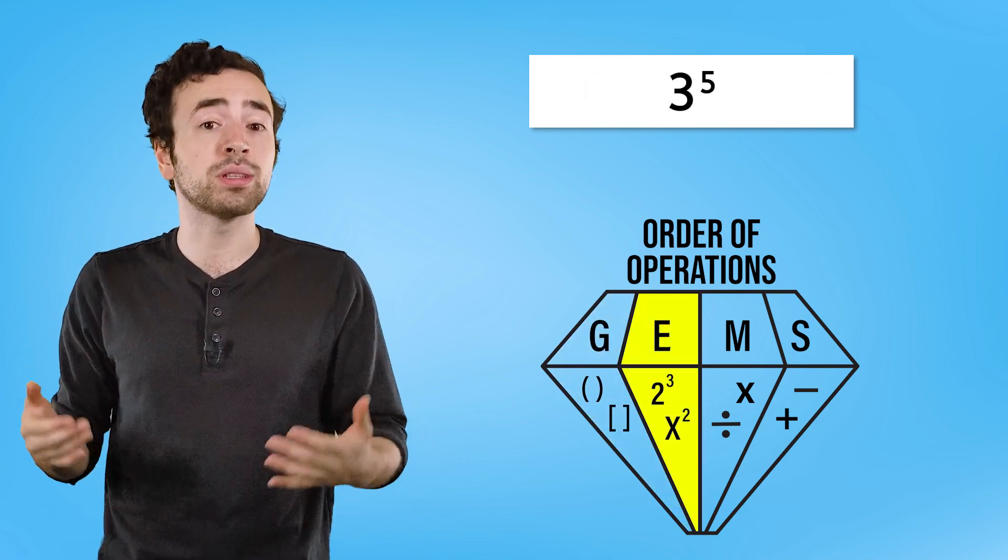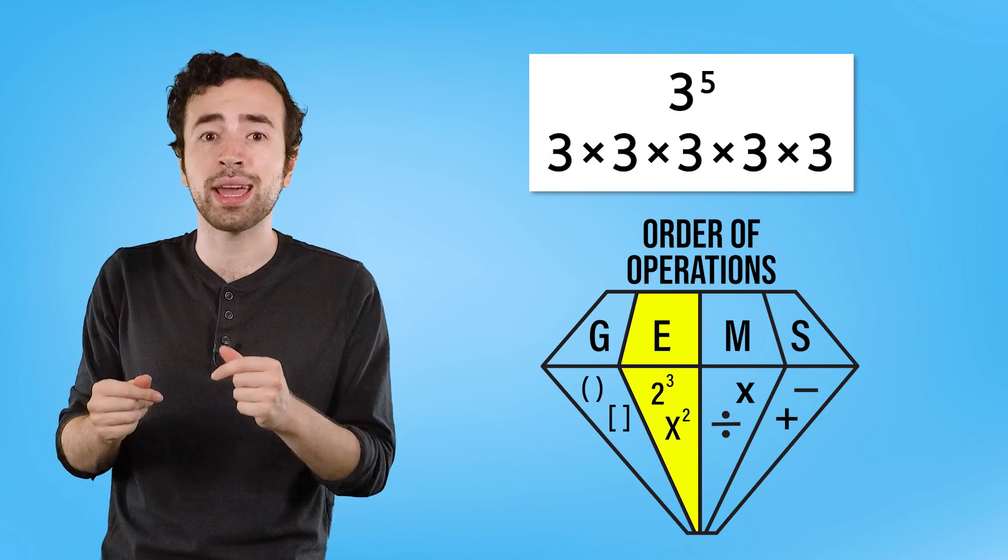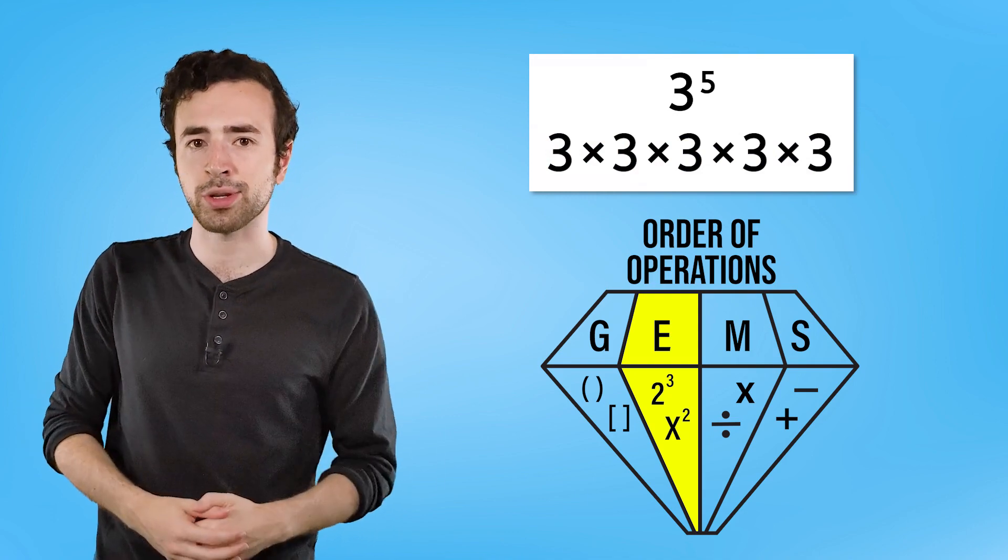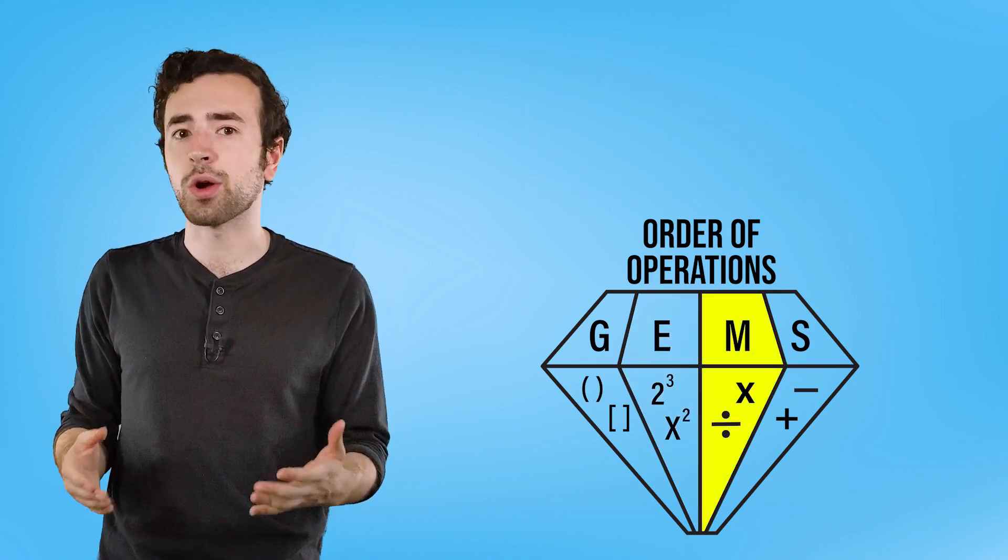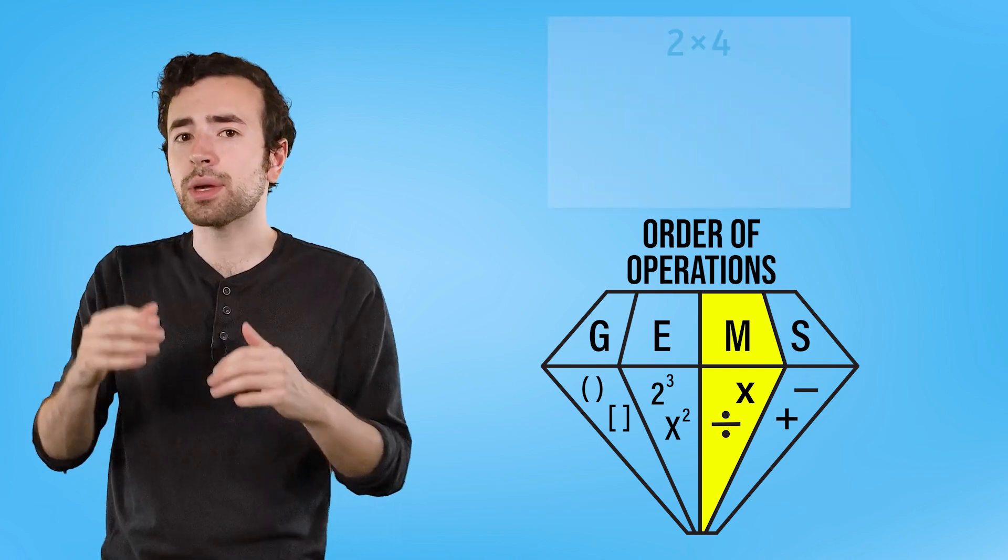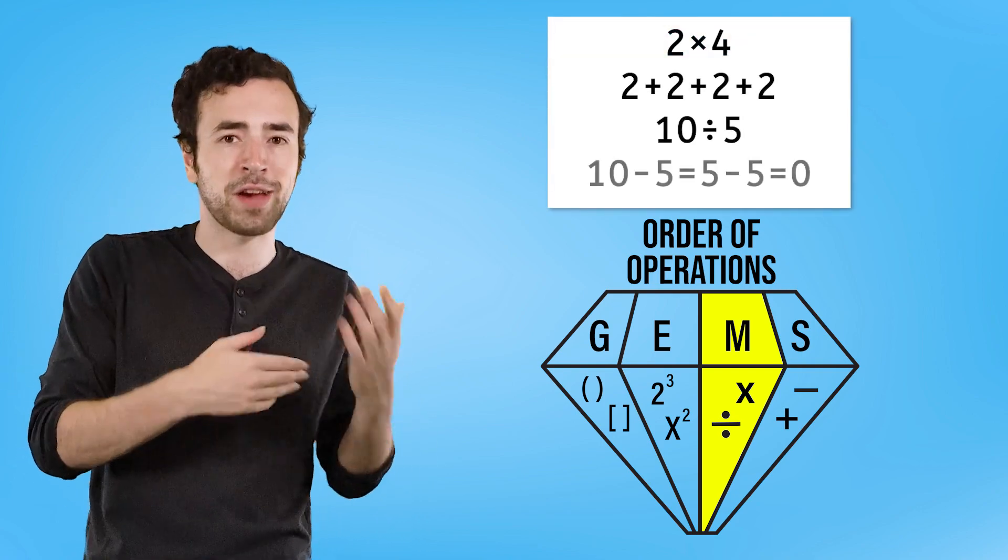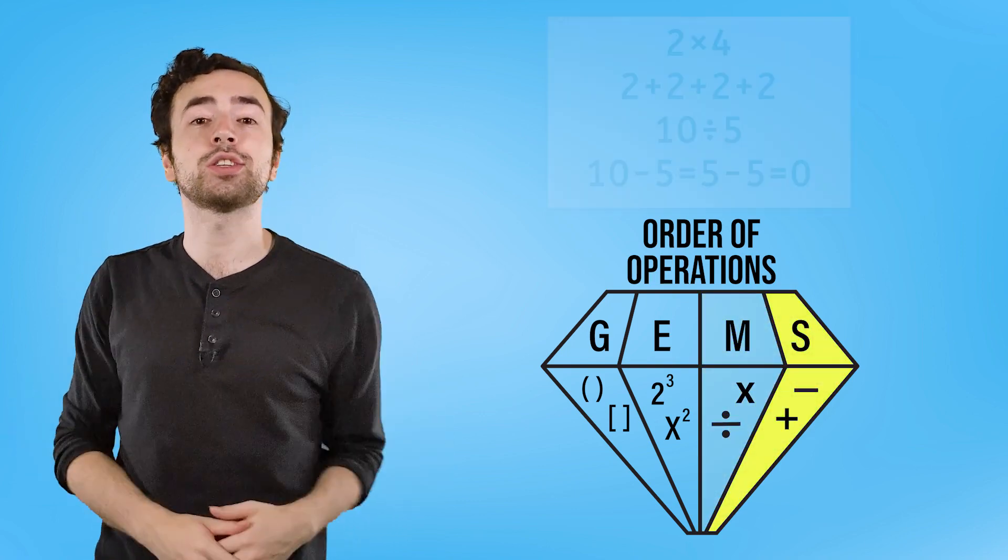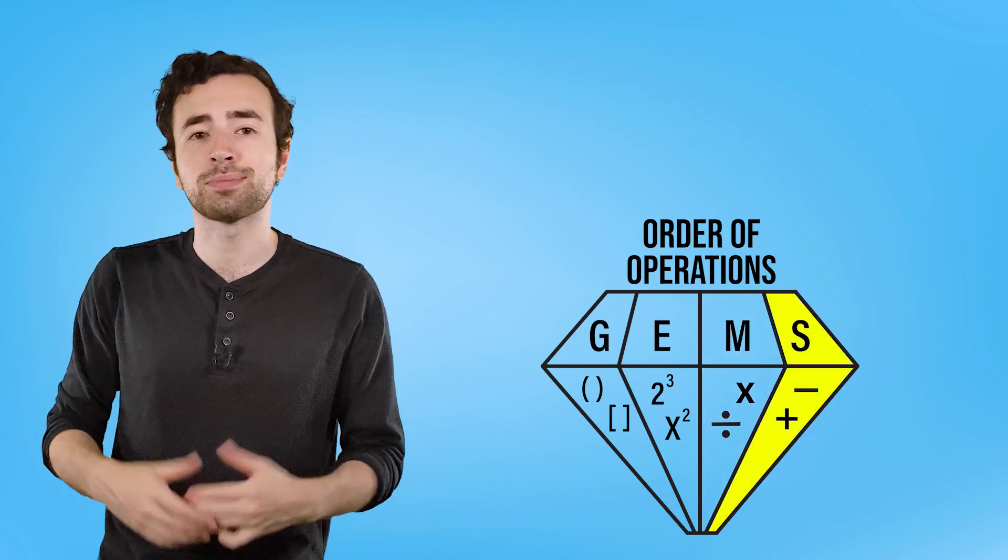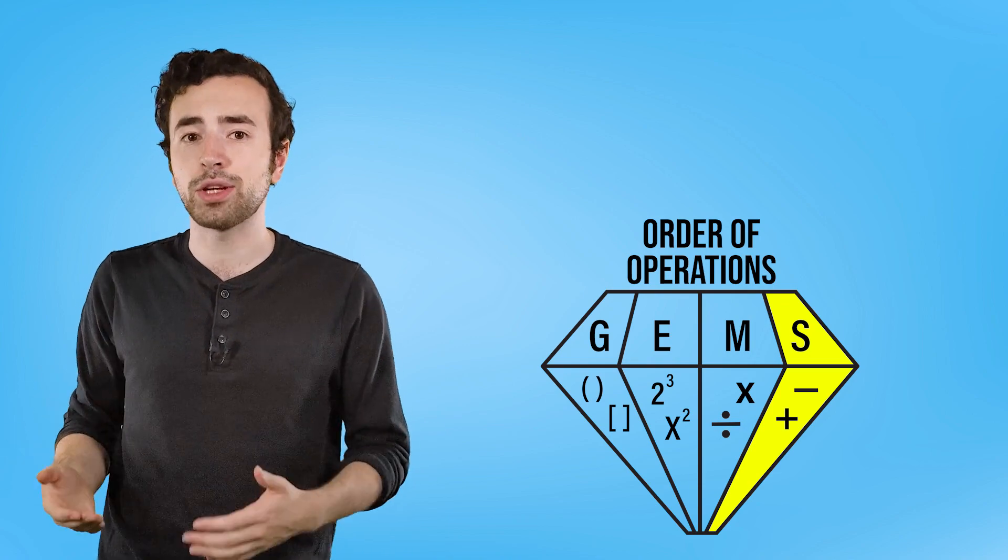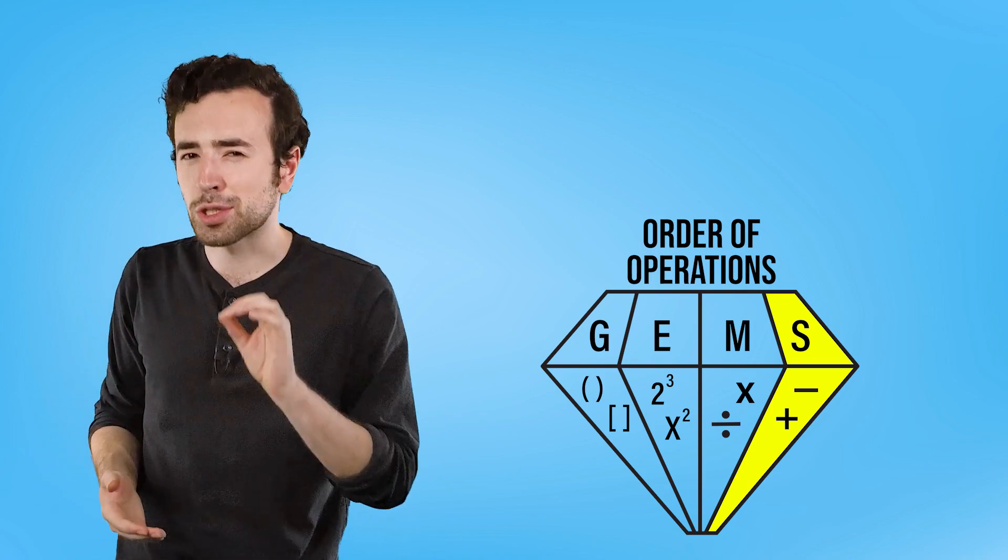Parentheses or brackets signal us to isolate that section of the equation and solve it first. We handle exponents next because they represent a speedy way of repeated multiplication. Multiplication and division are next. They are ranked equally because multiplication is a faster form of addition and division is a faster form of subtraction. And finally, subtraction and addition are performed last because they're the most basic math operations and therefore have the lowest priority.